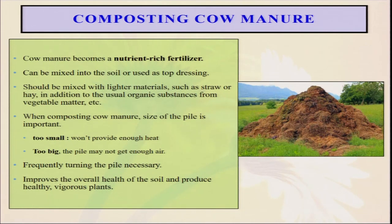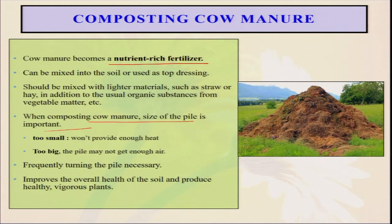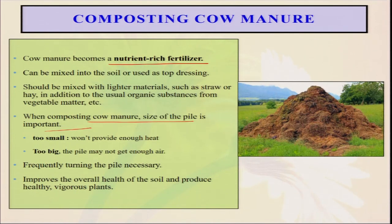In the process, the material becomes nutrient-rich fertilizer. There are lots of composting methods and we have to adopt a suitable composting method, which is particularly applicable to that type of material. Different types of composting methods are available, but which composting method to use must be decided according to the agroclimatic condition and also the feeding materials. Whenever we apply this in the soil, it improves the overall health of the soil and produces healthy vigorous plants.